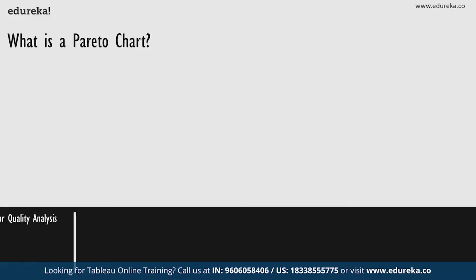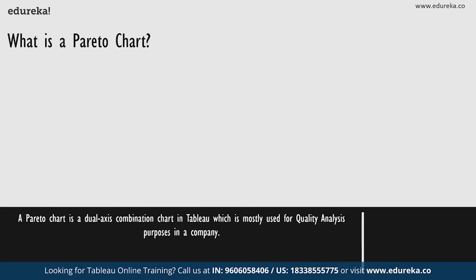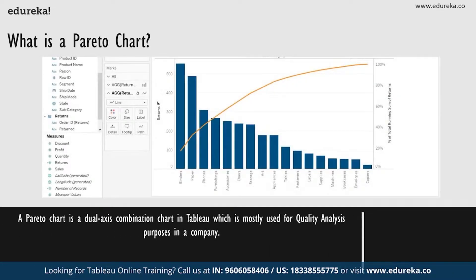So what is a Pareto chart? A Pareto chart is basically a dual axis combination chart in Tableau. On its primary axis, bars are used to show basic raw quantities for each dimension, usually sorted in a descending order. On a secondary axis, a line graph is then used to show the cumulative total in a running percentage format.